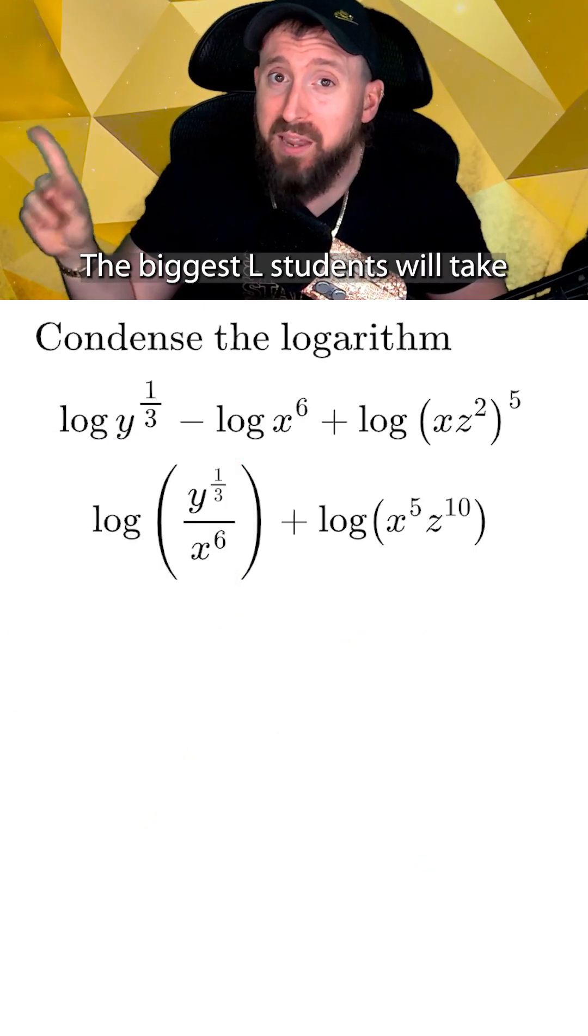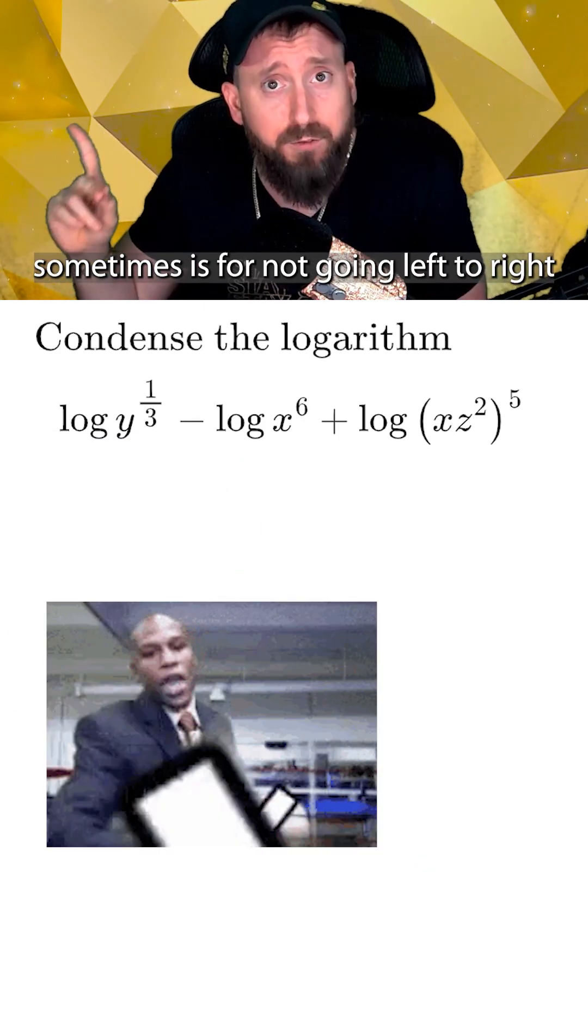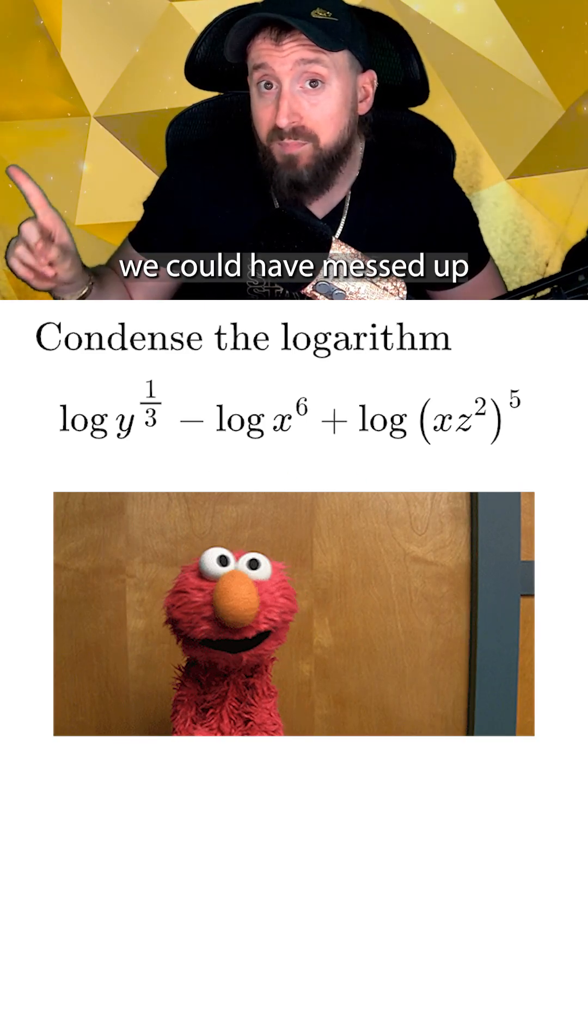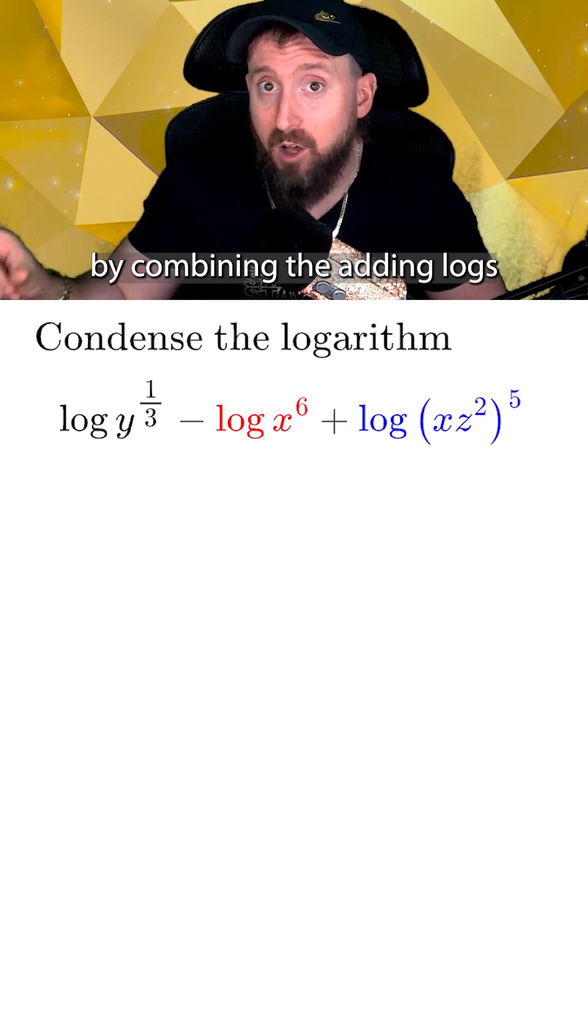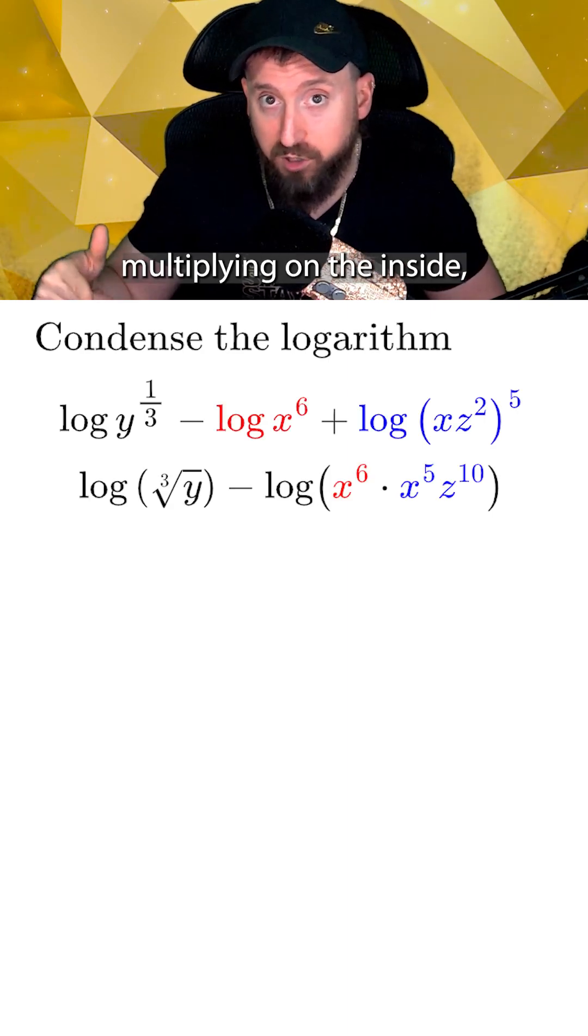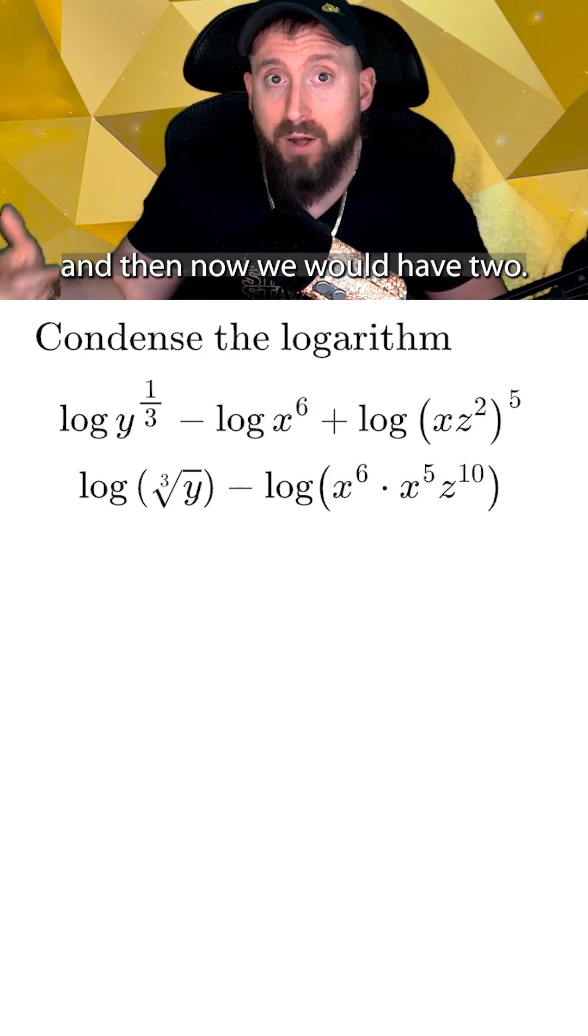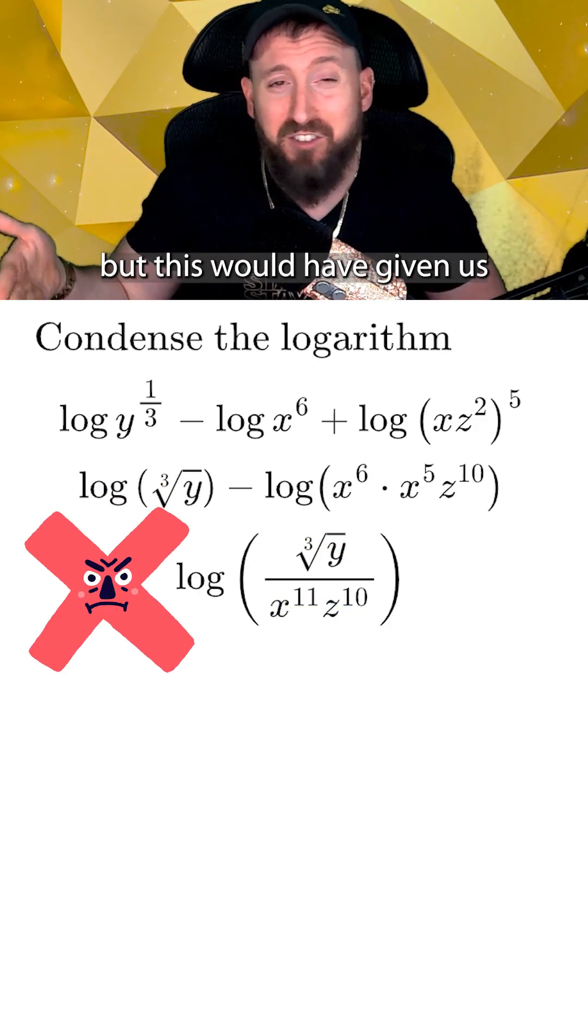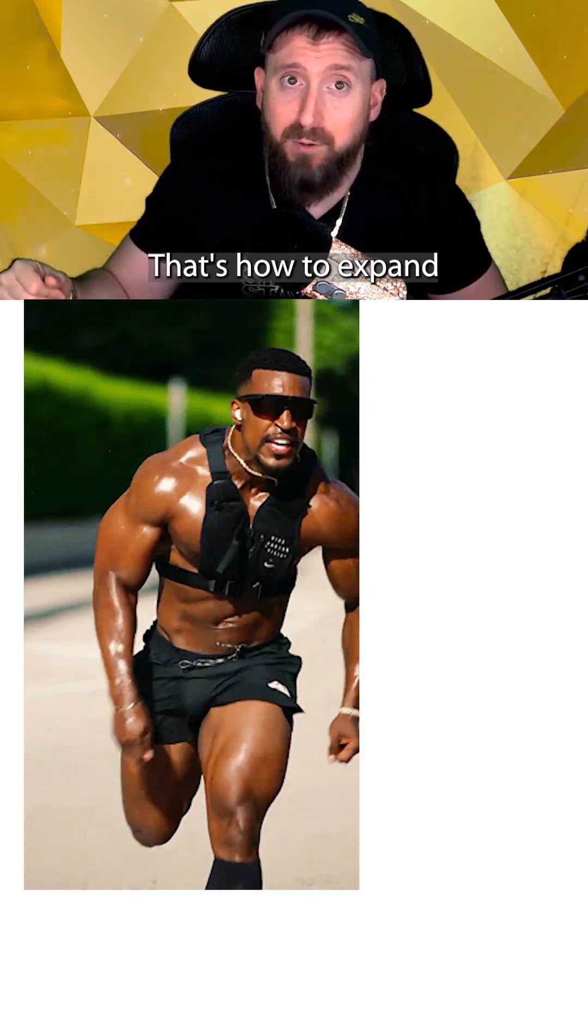Watch out though, the biggest L students will take sometimes is for not going left to right and doing the log things out of order. In this same example, we could have messed up by combining the adding logs on the right first so that they were multiplying on the inside, and then now we would have two subtracting logs left to combine as dividing. But this would have given us the wrong answer. And there you have it. That's how to expand and condense logarithms. Nice!